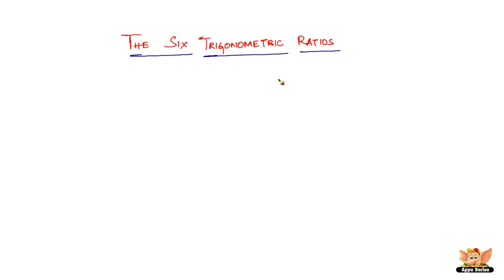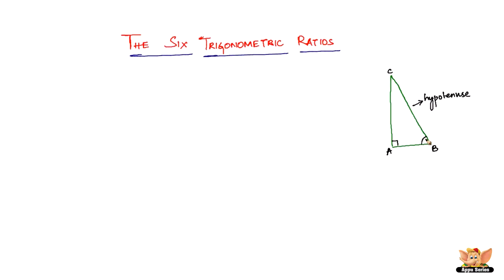Before we get into these six trigonometric ratios, we will need a right-angled triangle — and here we have it. This is the right-angled triangle, right-angled at A. In a right-angled triangle, there is a side called the hypotenuse — this is that side. If this is a right angle, let's say this angle is theta. The side opposite to theta is called the opposite, and the side adjacent to this angle is called adjacent.